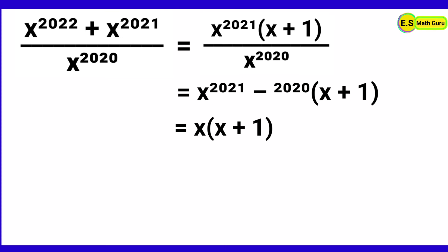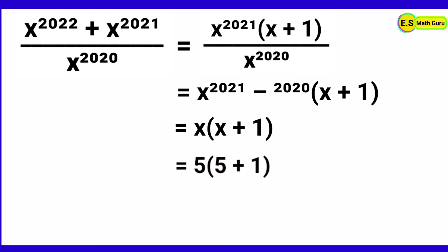Now let us substitute the value of x. We get 5 × (5+1) = 5 × 6 = 30. Therefore the value of (x^2022 + x^2021) / x^2020 is equal to 30.